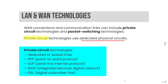Network devices include LAN and WAN technologies — local area network and wide area network technologies. WAN connections can include private circuit technologies and packet switching technologies. Private circuit technologies use dedicated physical circuits, including dedicated or leased lines, PPP or Point-to-Point Protocol, SLIP or Serial Line Internet Protocol, ISDN or Integrated Services Digital Network, and DSL which stands for Digital Subscriber Line.